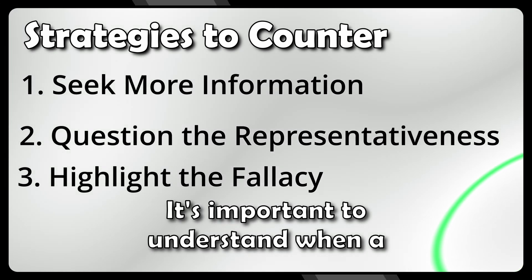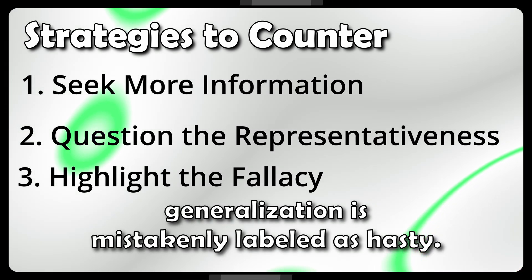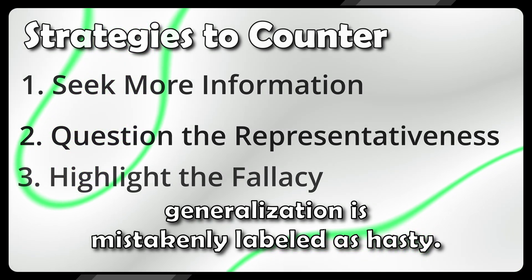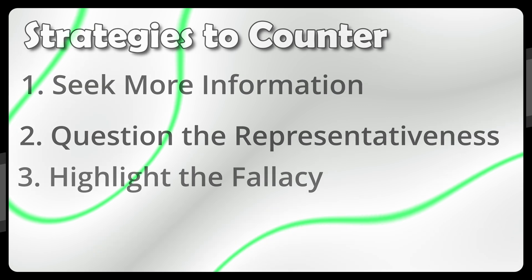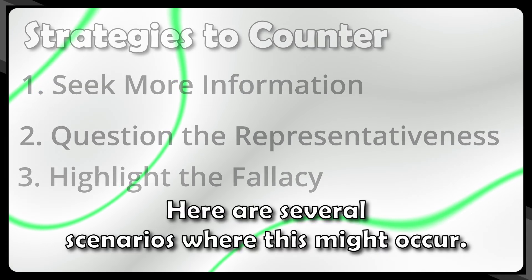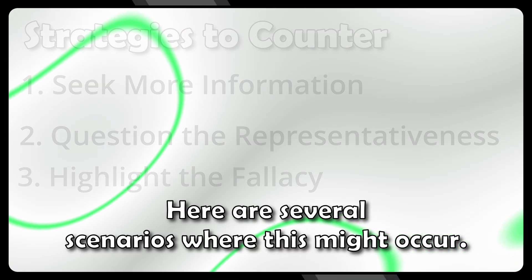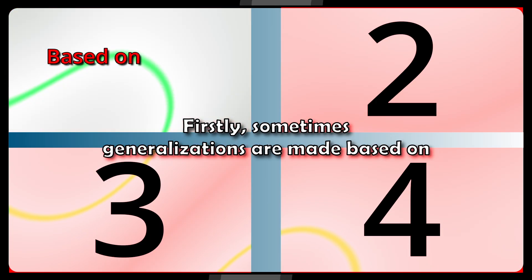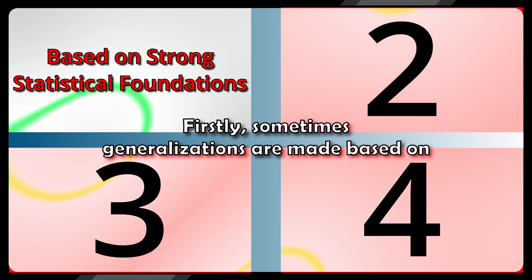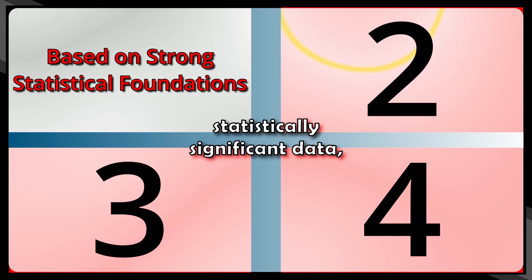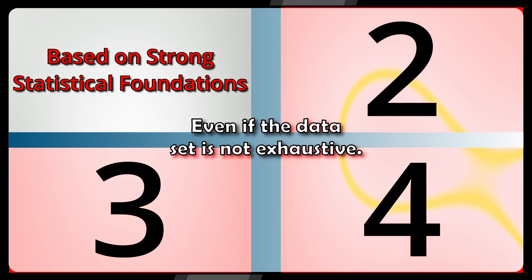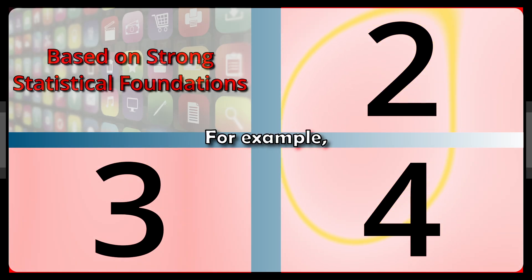It's important to understand when a generalization is mistakenly labeled as hasty. Here are several scenarios where this might occur. Firstly, sometimes generalizations are made based on statistically significant data, even if the data set is not exhaustive.